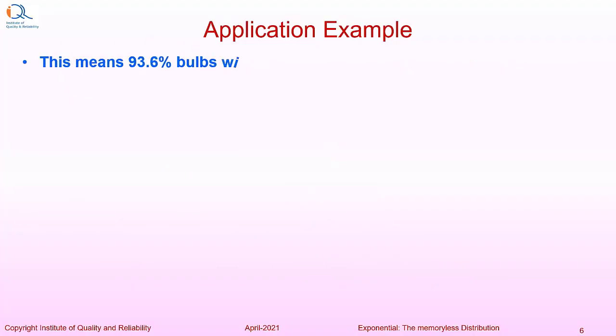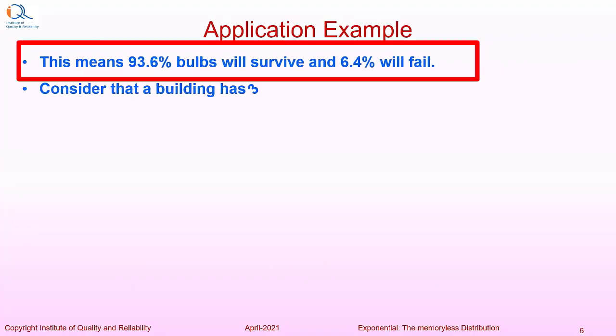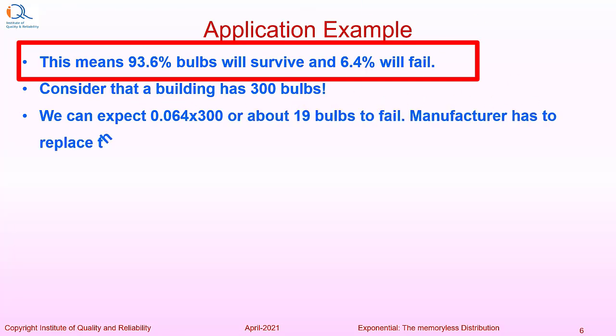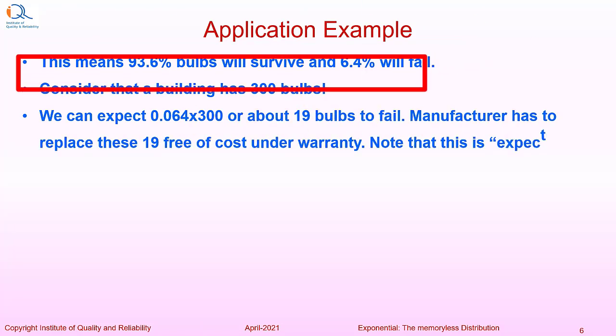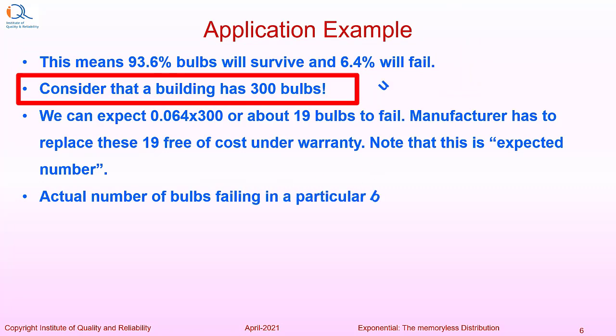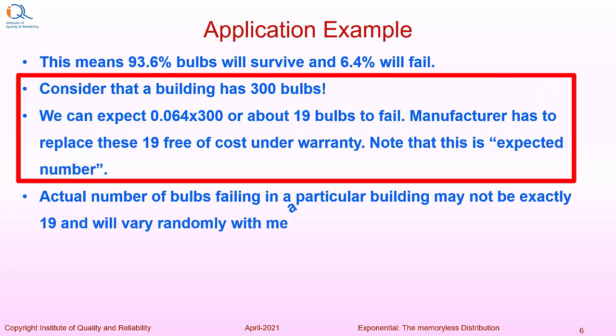This means 93.6% bulb will survive and 6.4% will fail during warranty. Consider that a building has 300 such bulbs. We can expect 0.064 which is probability of failure into the number of bulbs 300 or about 19 bulbs to fail.